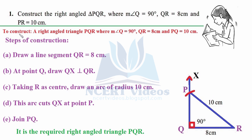First of all we'll write the aim as we always do in every question: construct a right-angled triangle PQR where 90 degrees is at angle Q, QR measures 8 centimeters, and PR measures 10 centimeters. From the question itself, the longest side is always the hypotenuse, so PR is the hypotenuse. The 90 degree angle is at Q and the other side is QR equals 8 centimeters.